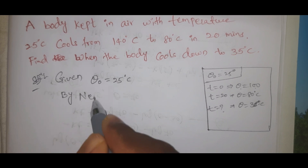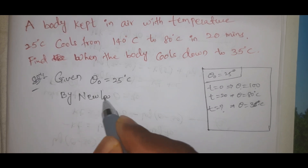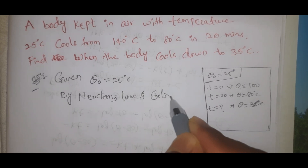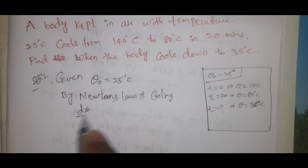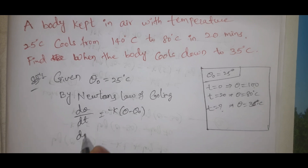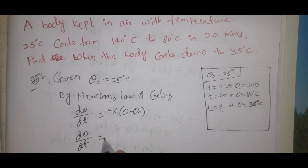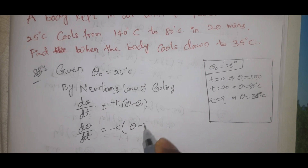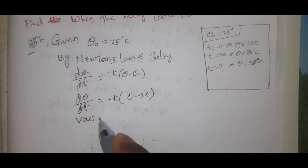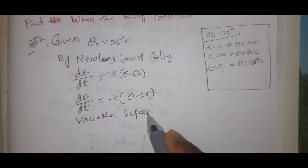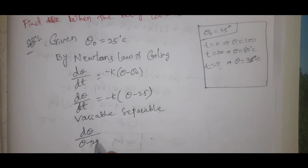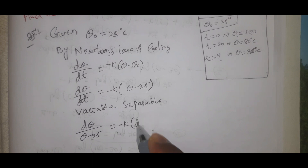By Newton's Law of Cooling, we get: d-theta by dt equals minus k into (theta minus theta-naught). Substituting theta-naught equals 25: d-theta by dt equals minus k into (theta minus 25). Now, applying variable separable method: d-theta by (theta minus 25) equals minus k dt.